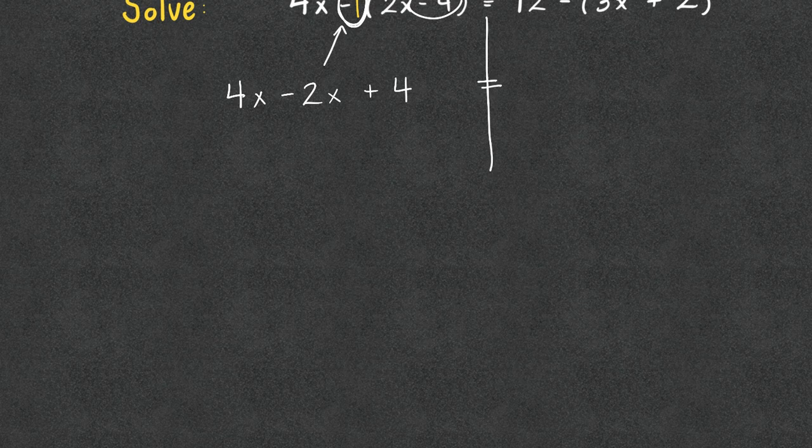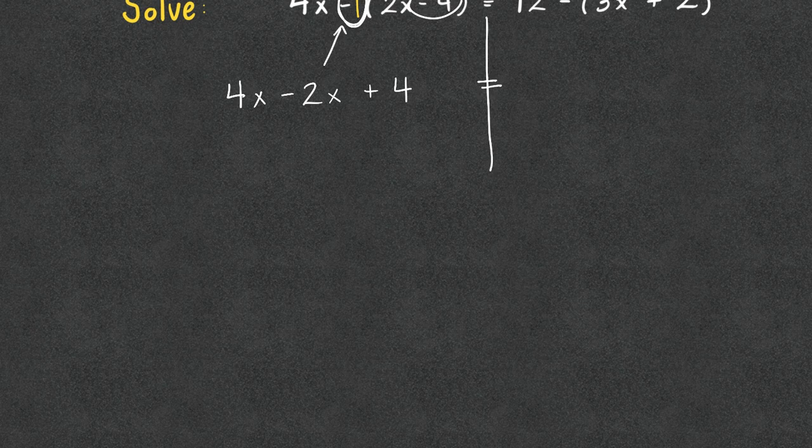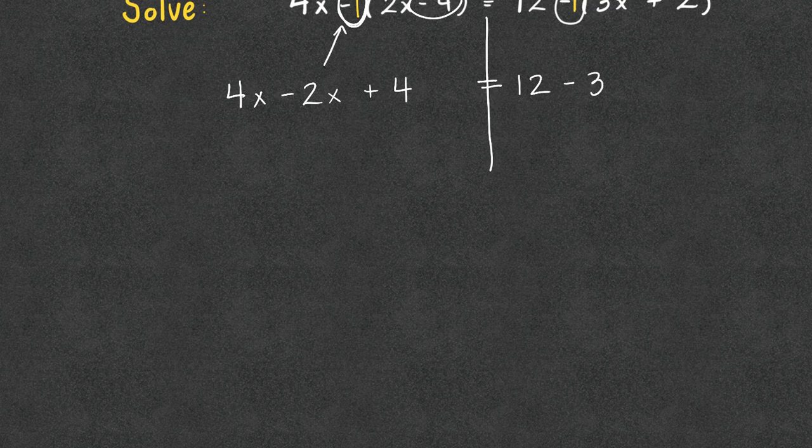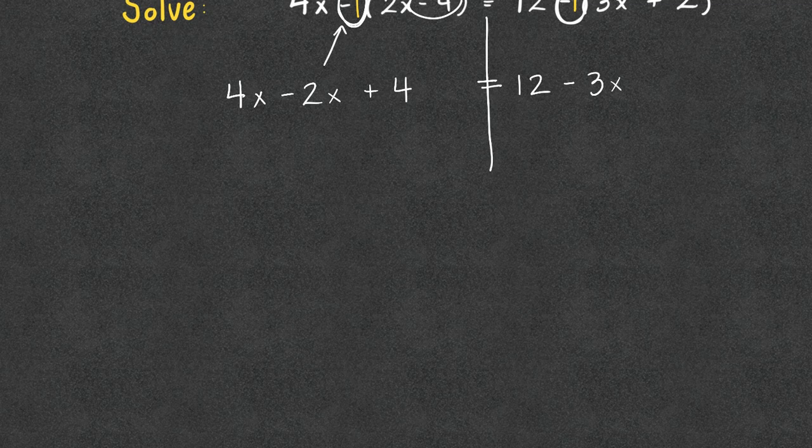Now we're going to do the same thing over on the right side. Same idea, we have a minus sign in front of parentheses, which means we can put a one there in case you like to see it that way. The 12 is going to stay the same. We now have negative one times 3x, which gives us minus 3x, and we have negative one times a positive two, which leaves us with a minus two.